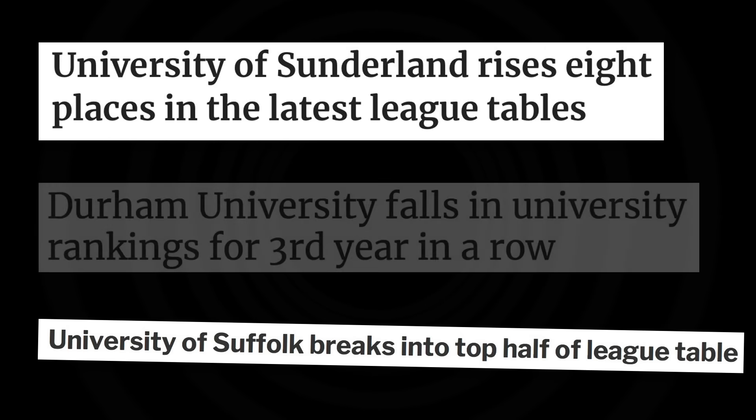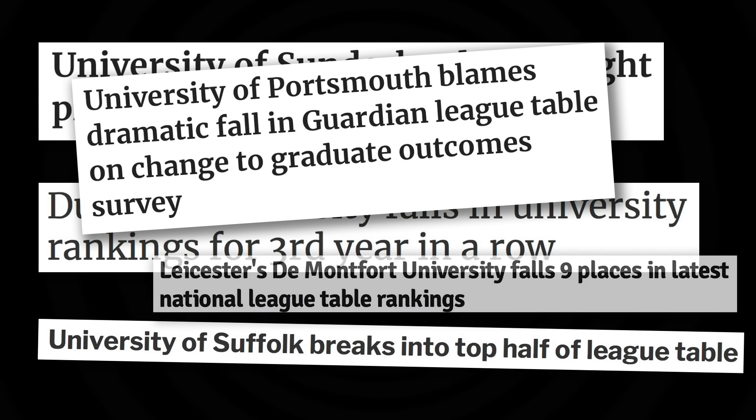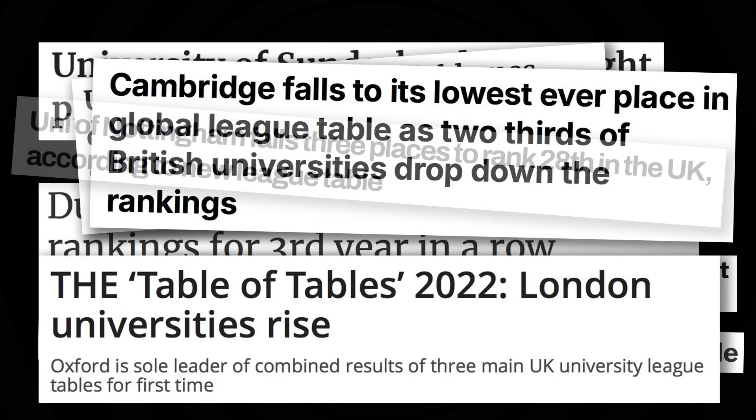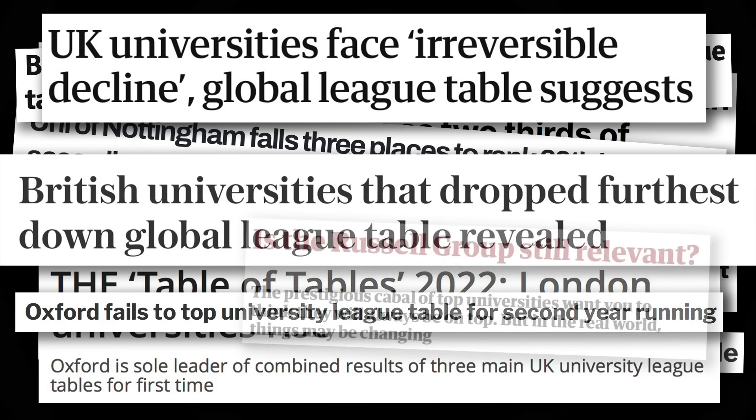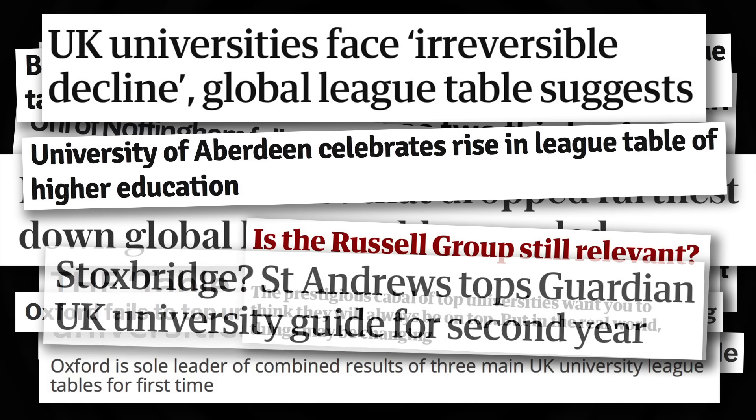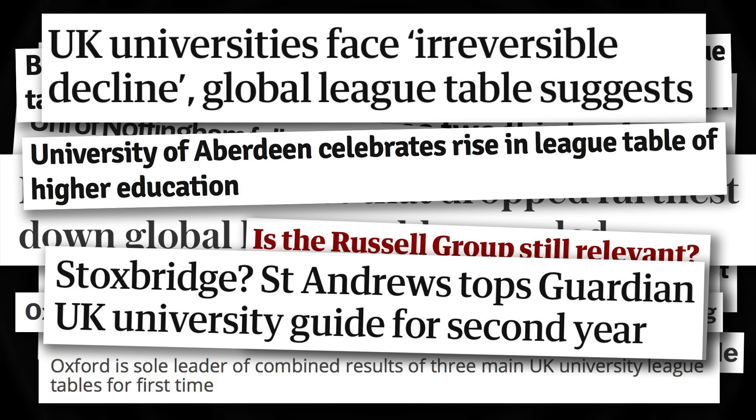They put out a new league table every year and worried parents or prospective students go out and buy it to see which is this year's best university. That means they actually have a vested interest in volatility, because if this year's league table is just the same as last year's, there's no point publishing a new one. So they have a vested interest in keeping things changing and coming up with new algorithms every year.